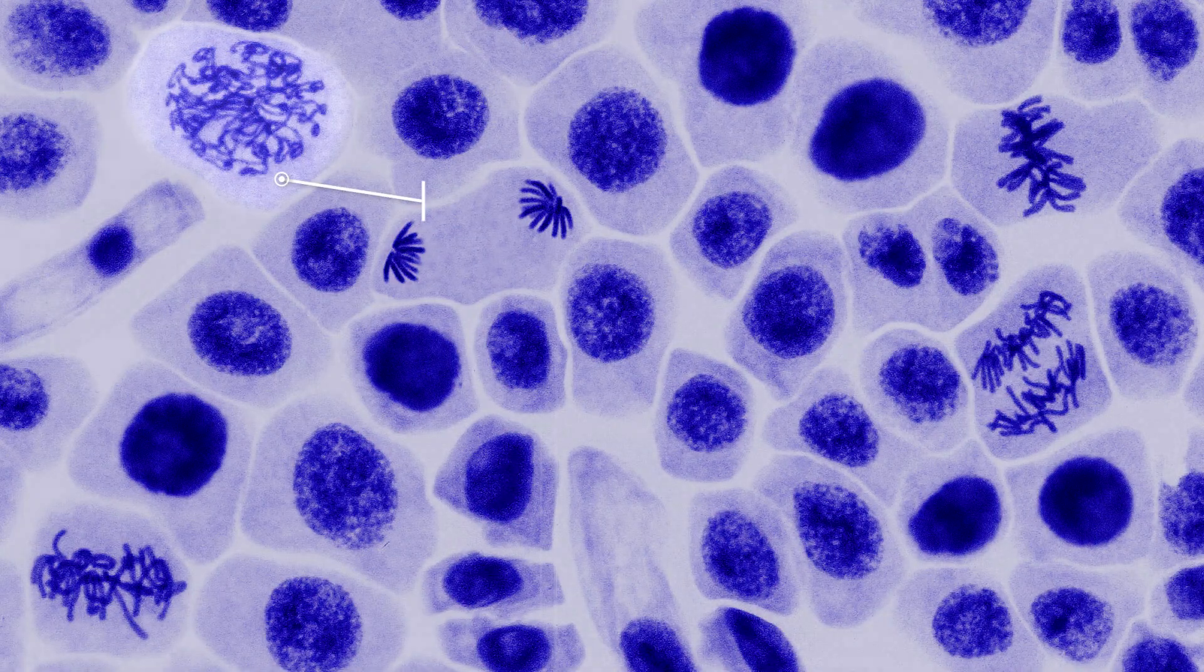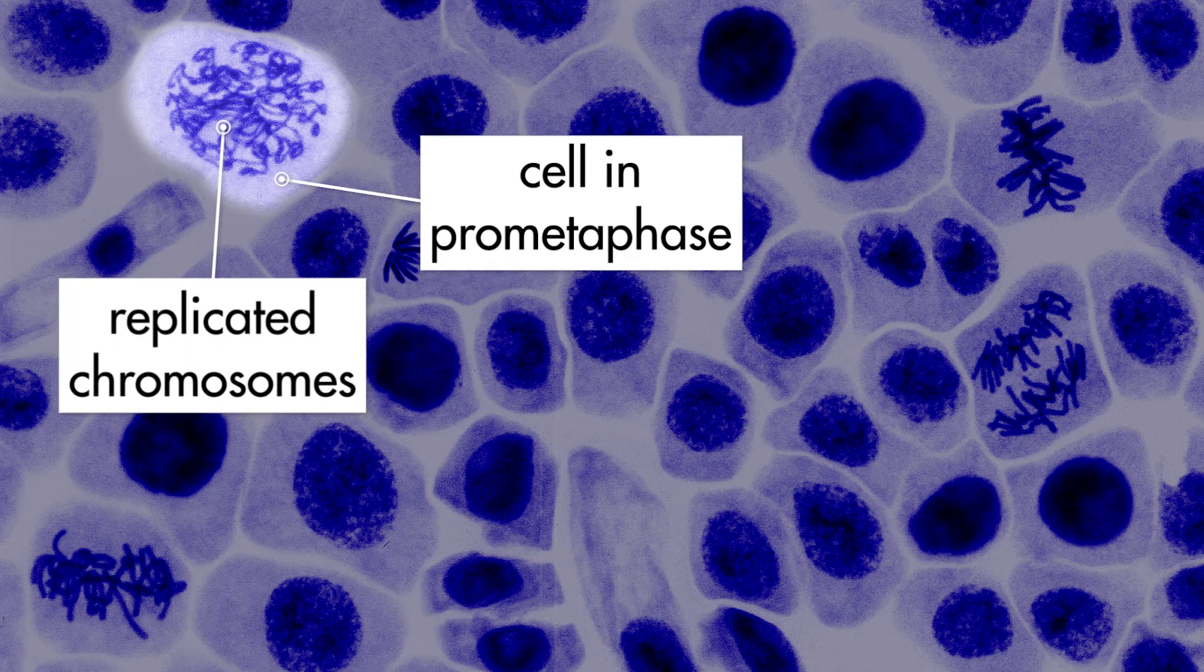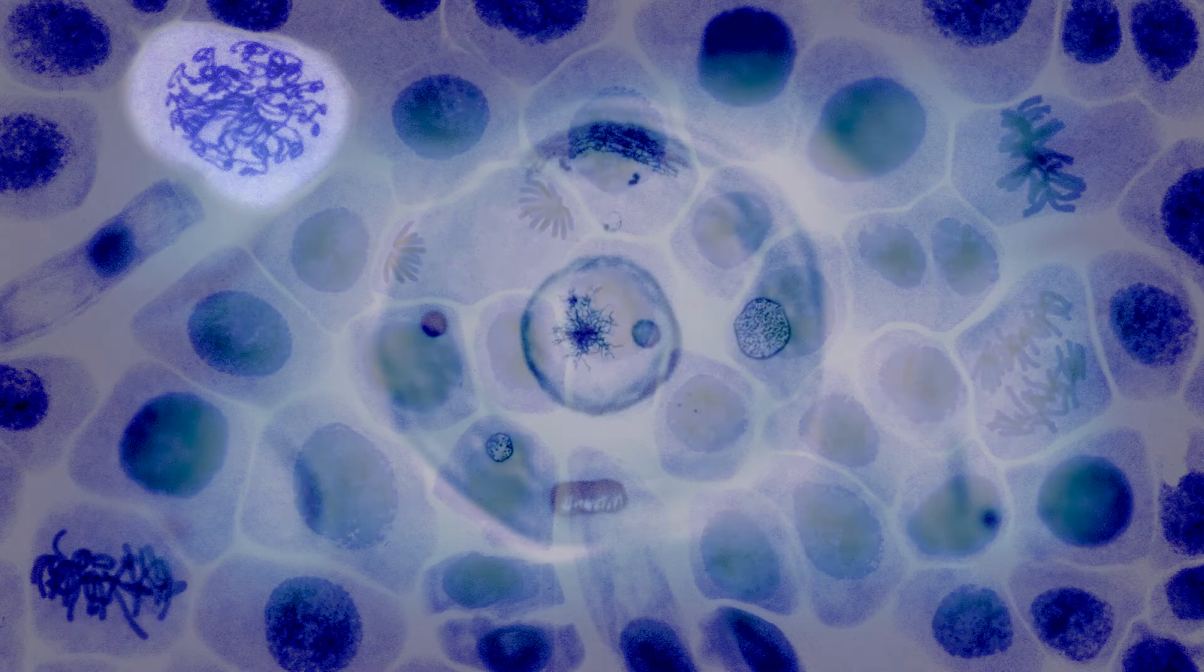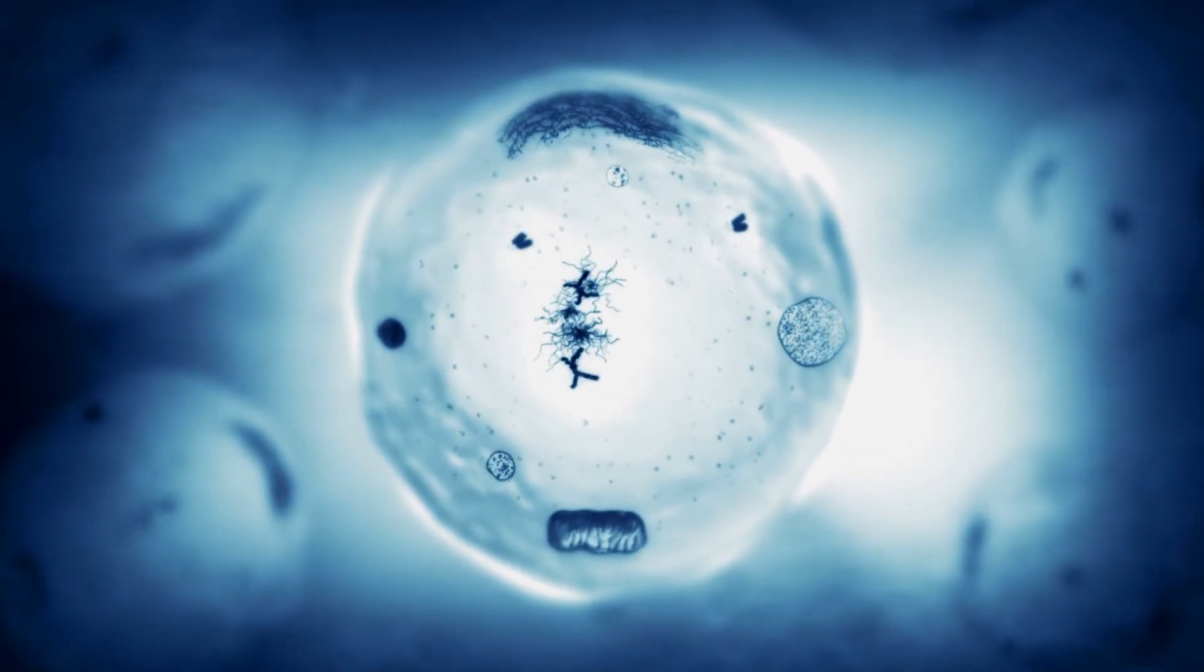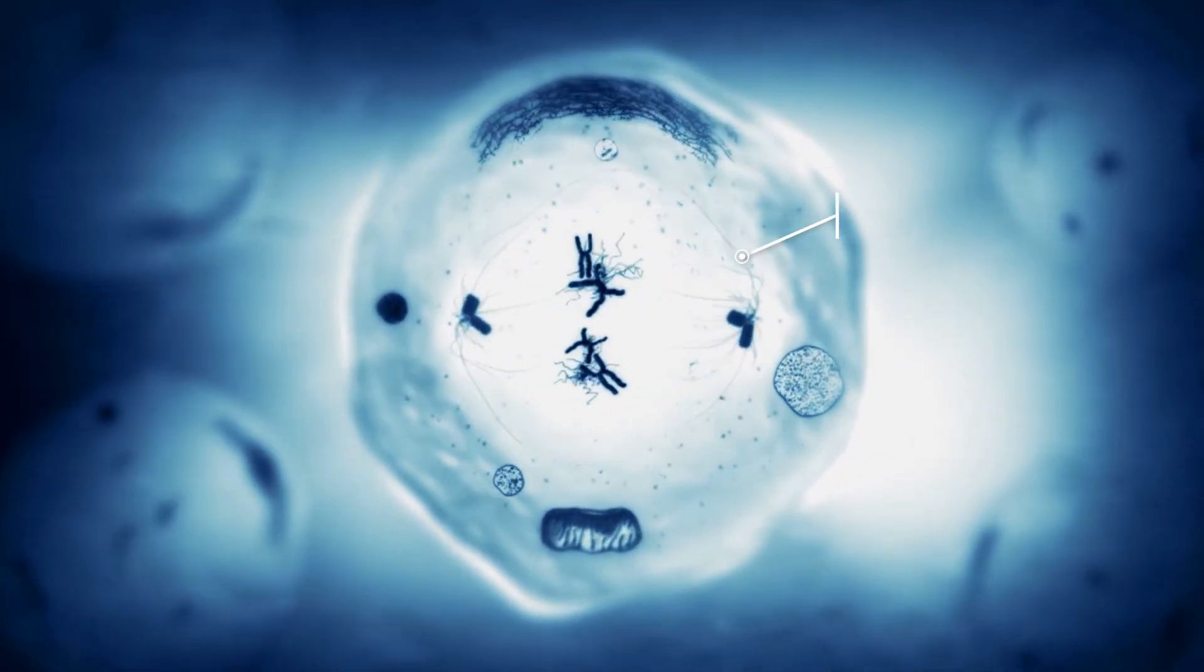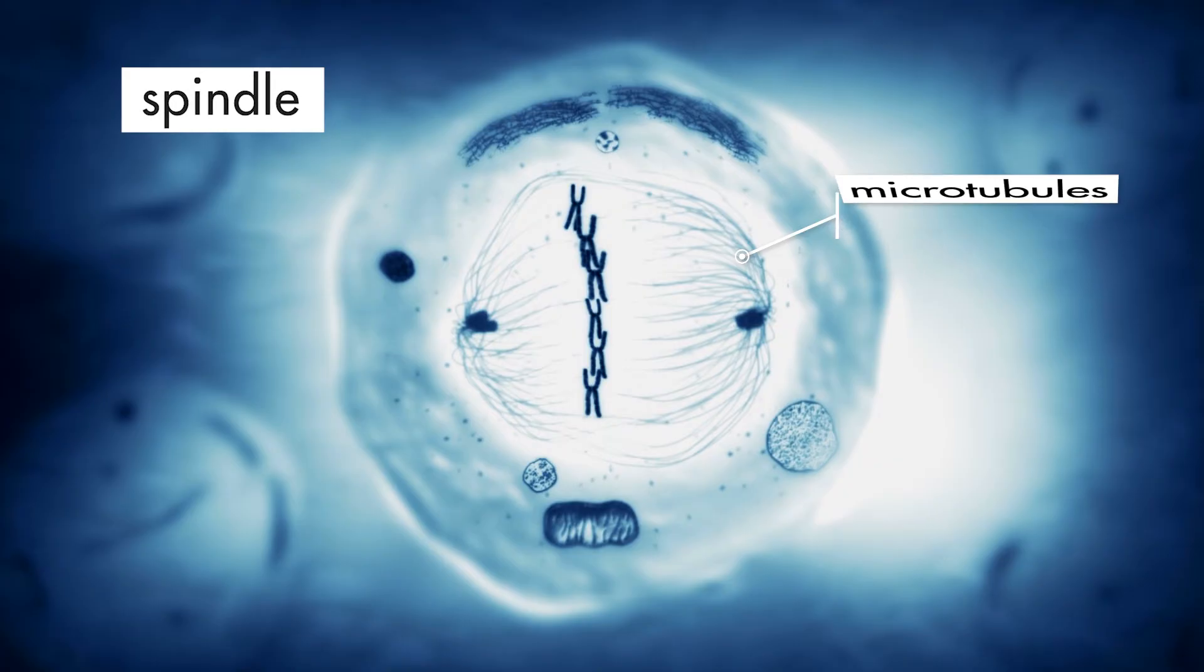The next phase of mitosis is prometaphase. During prometaphase, the cell's nuclear membrane dissolves. Notice that the shapes of the replicated chromosomes are becoming easier to distinguish. After the nuclear membrane dissolves, hollow protein tubes called microtubules extend across the cell and attach to the replicated chromosomes. The microtubules begin to form an oval-shaped grid or spindle which stretches across the cell from pole to pole.